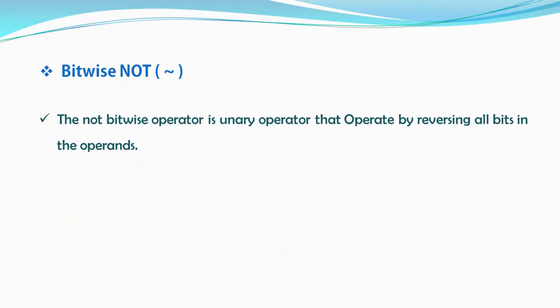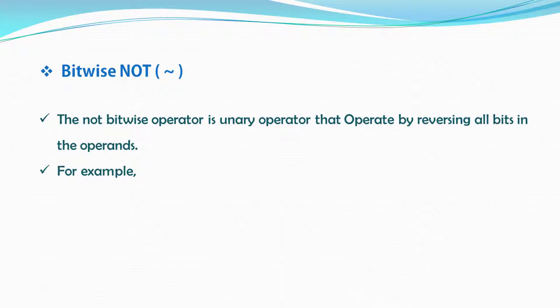The next operator is NOT. The NOT bitwise operator is a unary operator that operates by reversing all its bits in the operand. For example, when you execute this you will get this result, or minus 16.